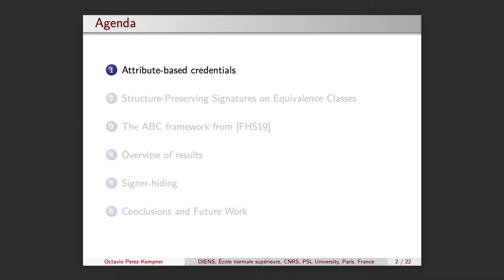Right after, I will give an overview of our results and comment on the main building blocks, which are Structure-Preserving Signatures on Equivalent Classes and the recent Credential Framework from Fuchsbauer, Hanser and Slamanig from 2019. Before concluding, I will dive a bit into the notion of signer-hiding, which is one of our main contributions.